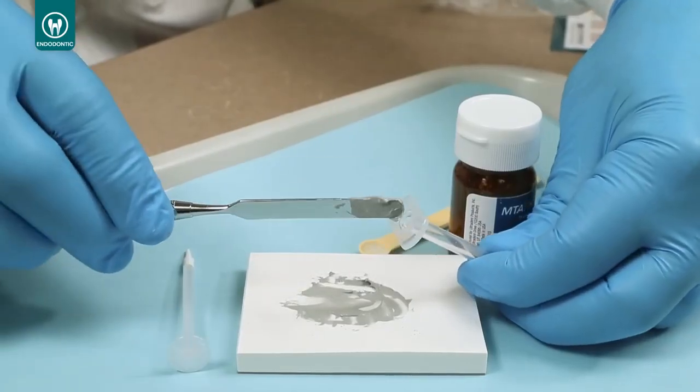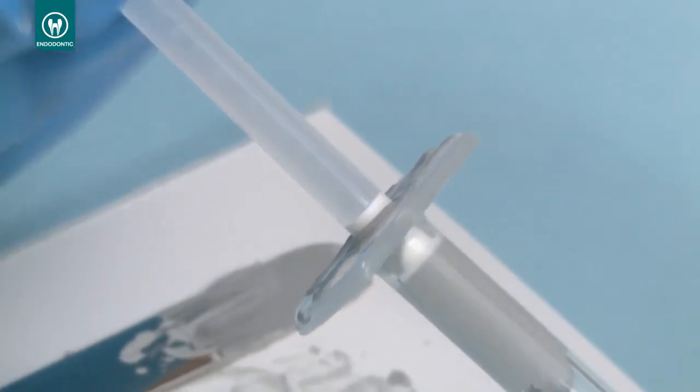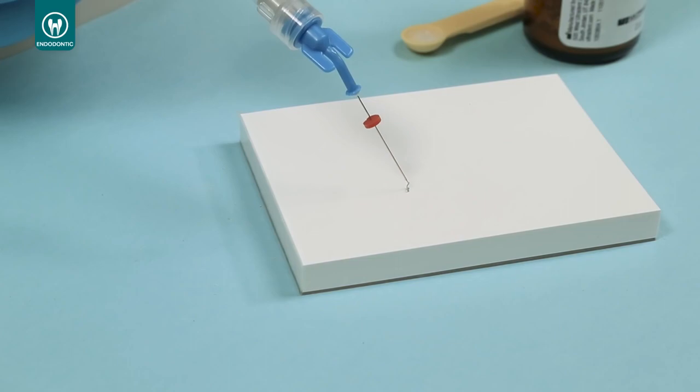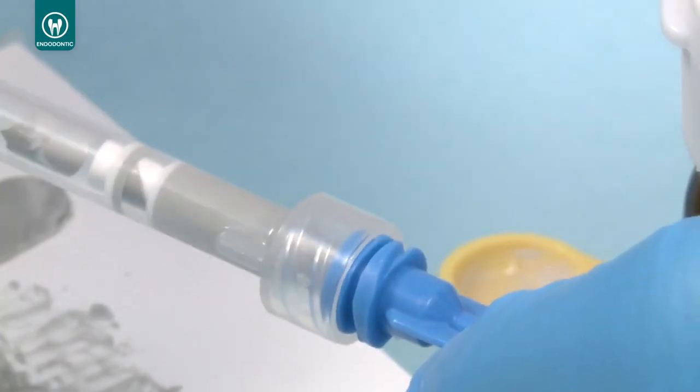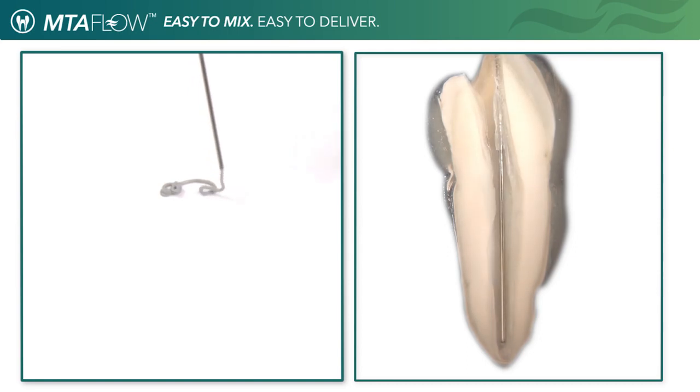Insert the mixed MTA Flow into the back of the skinny syringe. Reinsert the plunger and choose the desired tip needed. We suggest using the Ultradent NaviTip 29 gauge tip to accurately deliver the MTA Flow inside the canal.